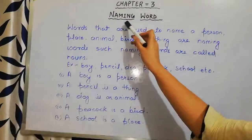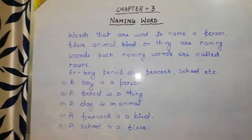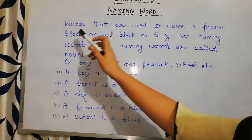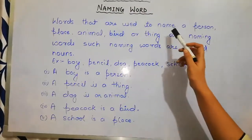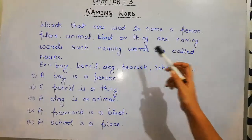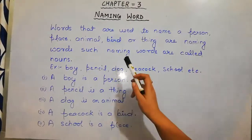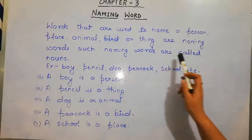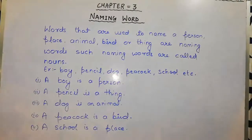So, first of all, we need to know what is naming words. Words that are used to name a person, place, animal, bird or thing are naming words. Such naming words are called nouns.